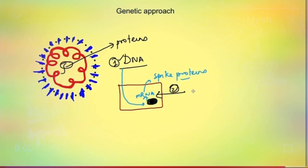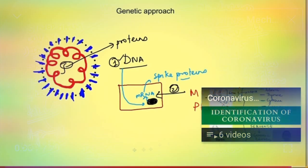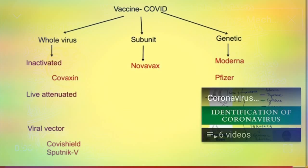The vaccines which have been developed using this approach are Moderna vaccine and Comirnaty vaccine which is developed by Pfizer. So these were broad vaccine approaches which are being used for development of vaccine against COVID-19.